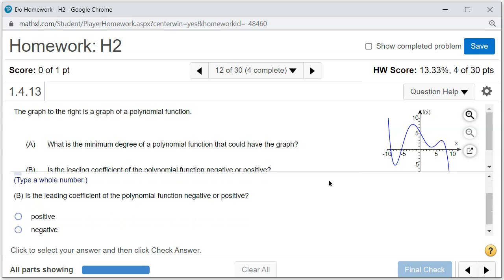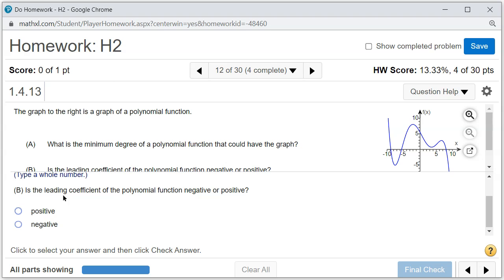Then here, Part B: Is the leading coefficient of the polynomial function negative or positive? So what you do is you go to the right end. If it's pointing down, then it's negative, and in this case it is. If it's pointing up, it's positive. So in this case it's negative.